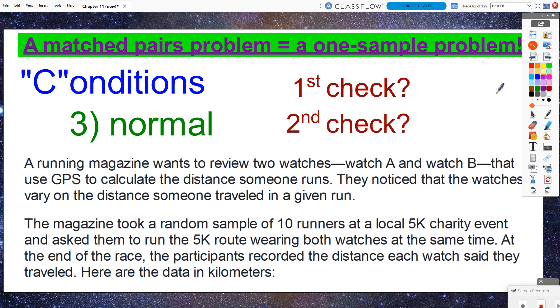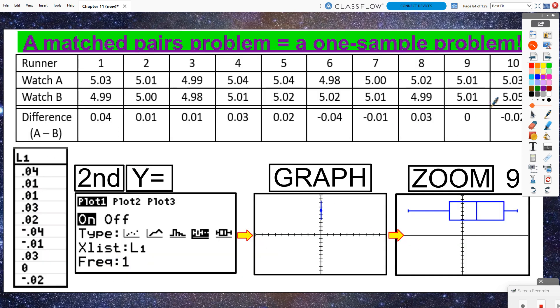So what does that look like for our watch scenario here? It doesn't state anywhere that the population distributions are approximately normal. So no good there. And we only have a random sample of 10 runners. So that's not big enough for the central limit theorem. So we need to go to option three. We need to look at a graph of our differences.